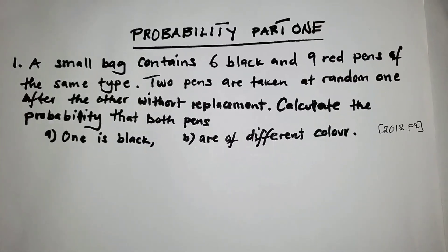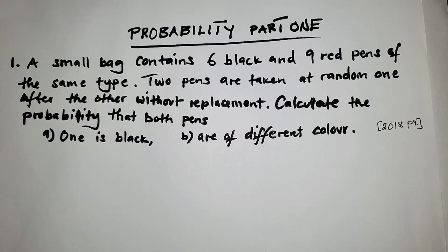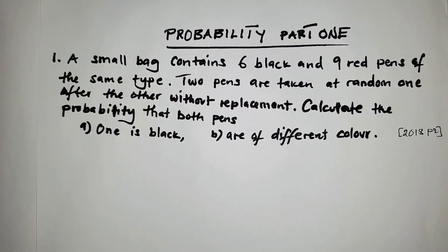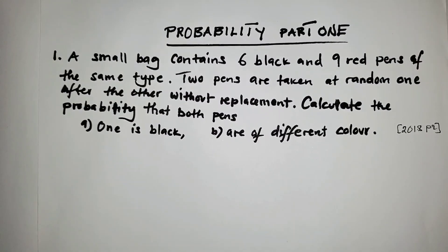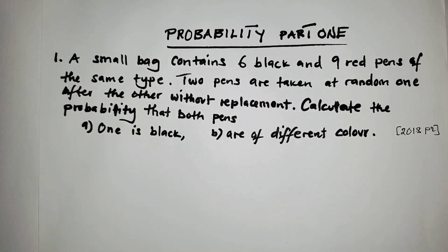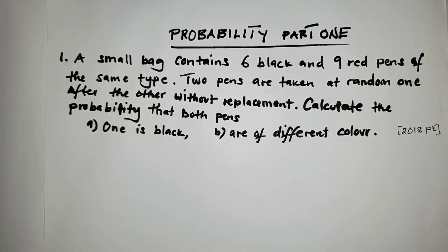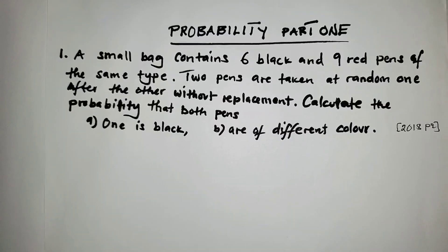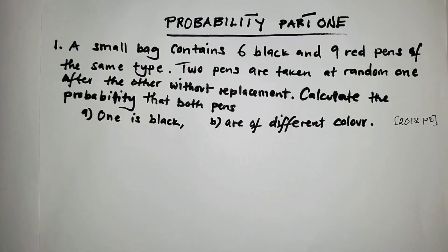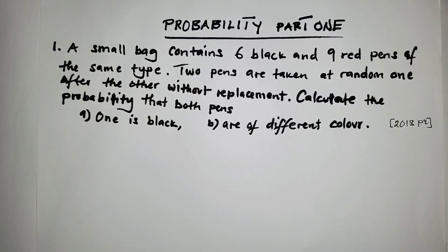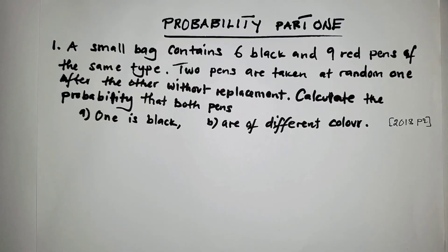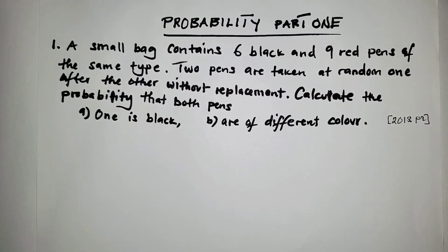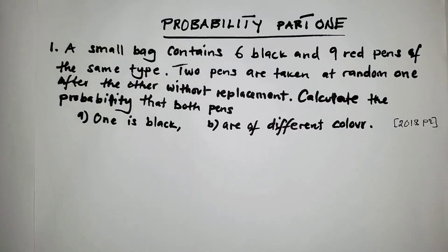Let's get started with Probability Part 1. The question says: a small bag contains six black and nine red paints of the same type. Two paints are taken at random, one after the other, without replacement. Calculate the probability that both paints: A) one is black, B) are of different colors. We'll use a tree diagram for easy calculations.